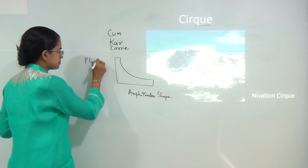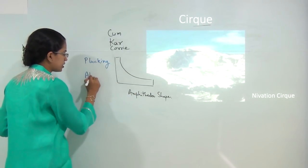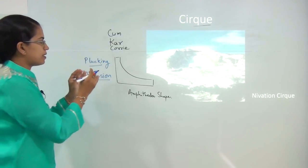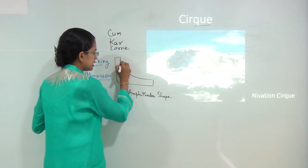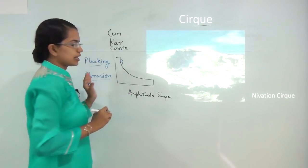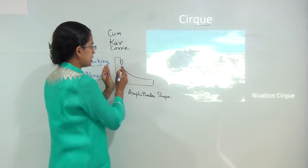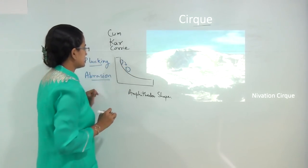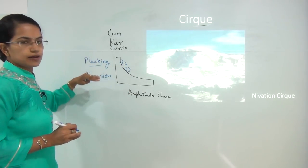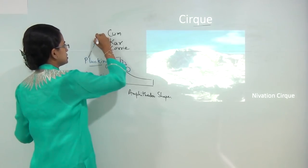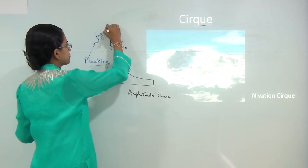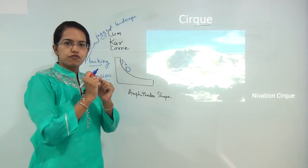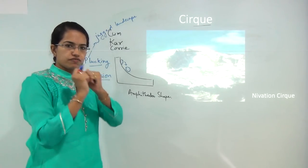Two important processes to understand are plucking and abrasion. Plucking is a phenomenon where rock mass is attached to the glacier and in due course of time it tumbles down — this is known as plucking. Plucking usually gives a jagged landform. In the case of abrasion, it involves the movement of particles against one another, creating a surface similar to sandpaper.